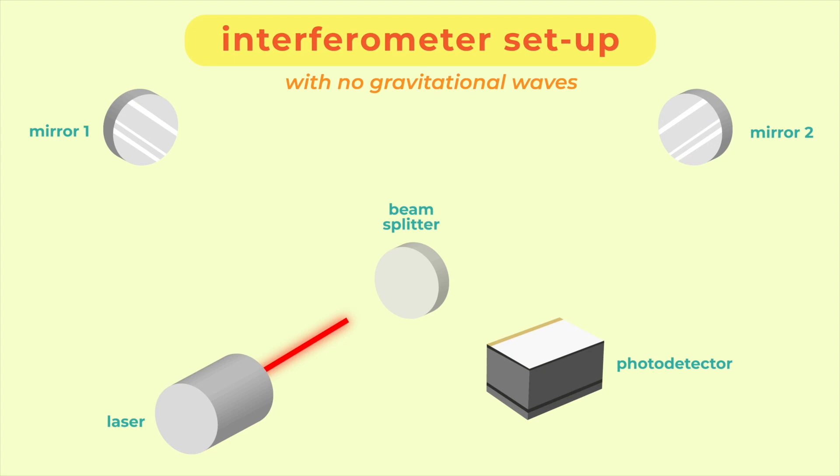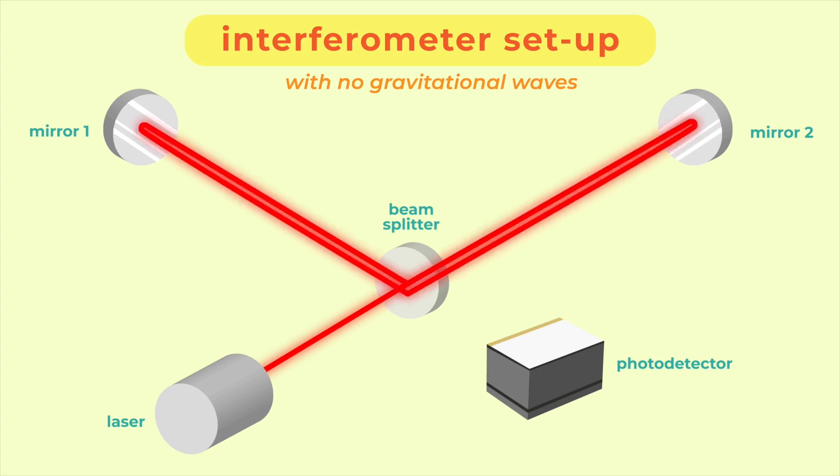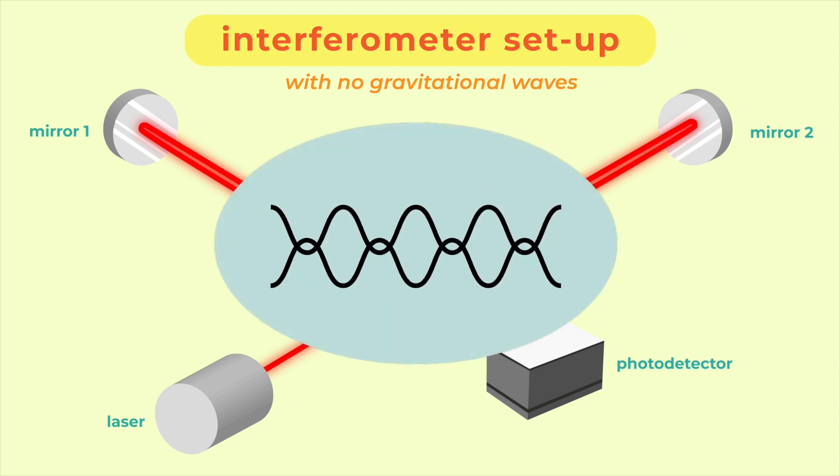With no gravitational waves, the laser beams are reflected at the same distance back towards the center, with no light beam visible at the photodetector. Why? The waves are rearranged in such a way that they cancel each other out, leaving no energy behind.